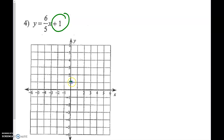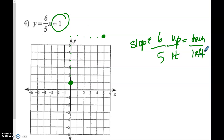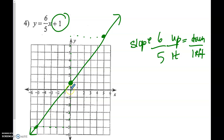Number 4. Here we have our y-intercept at plus 1, and the slope is 6 over 5 — both positive. So I go up 6 and over 5, but that brings me off the chart. So I need to go both ways: the opposite is down 6 and left 5. All of these points are in a nice straight line, so we have a constant rate of change. And this is non-proportional because it does not go through the origin.